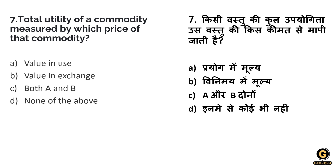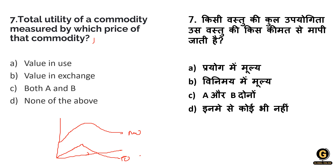Question 7: The total utility of a commodity is measured by which price of that commodity? We know there are two types of utility — marginal utility and total utility. The options are value in use, value in exchange, both A and B, or none of the above. The correct answer is option A — value in use.